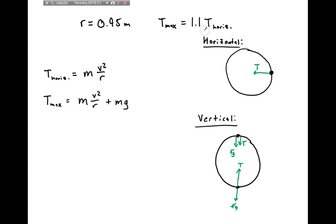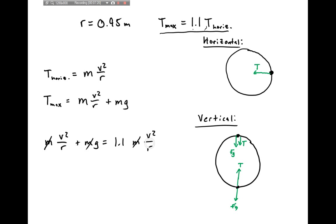I know the maximum tension equals 110% of the horizontal tension, so I can plug both expressions in: mv²/r + mg = 1.1 × mv²/r. The masses cancel, and rearranging — subtracting v²/r from both sides — I'm left with g on the left and 0.1 v²/r on the right. I can write this as (1/10) × v²/r.